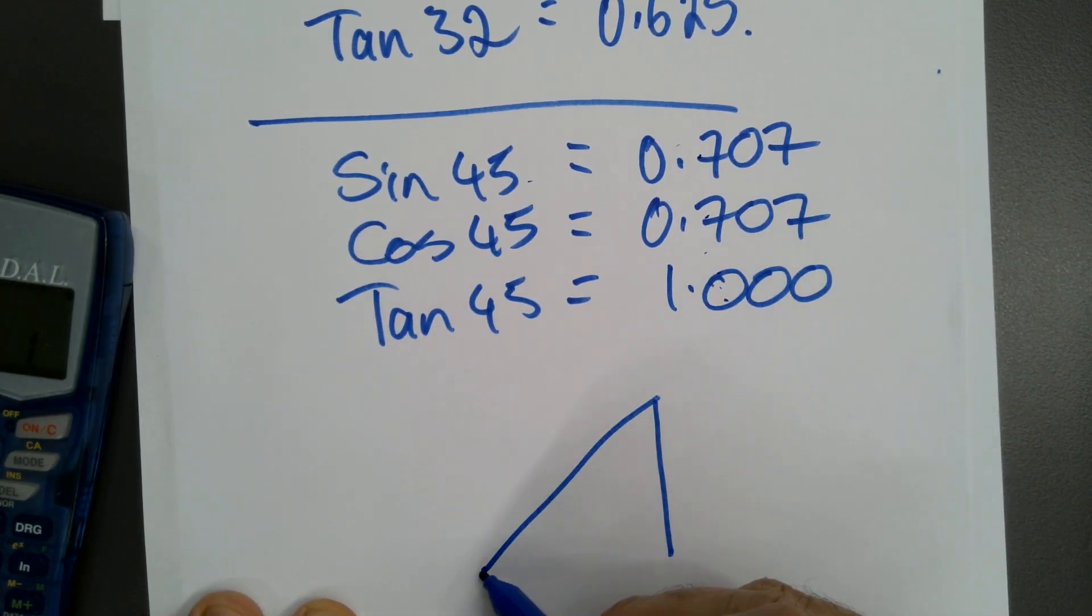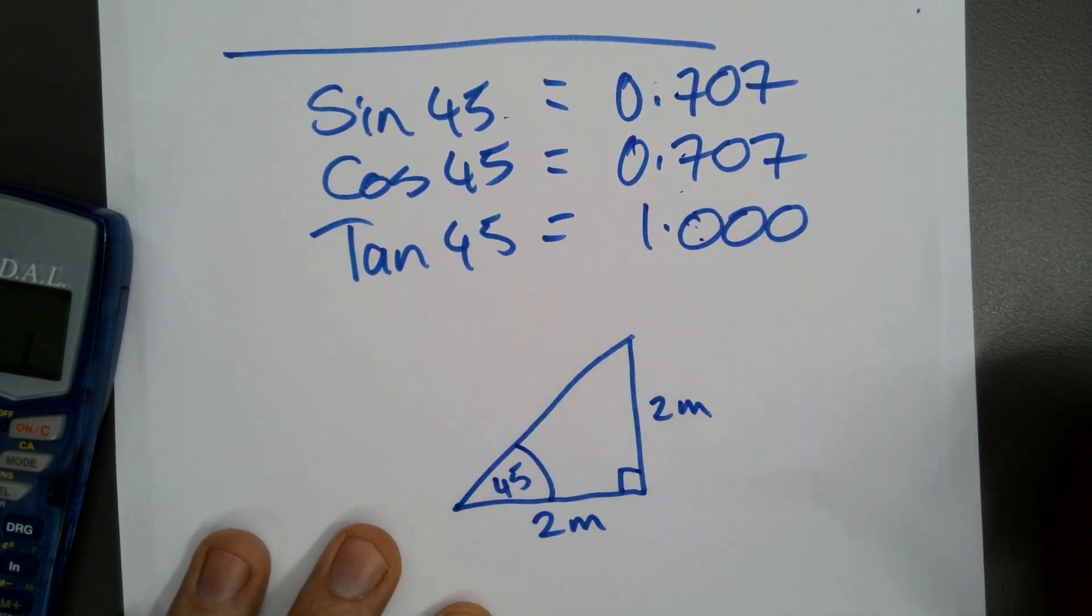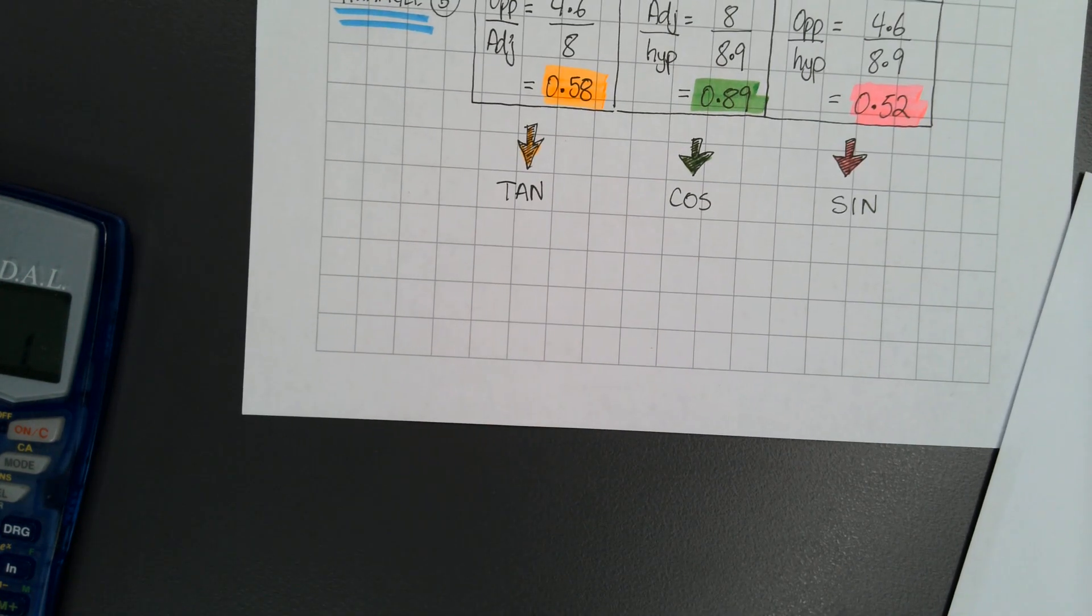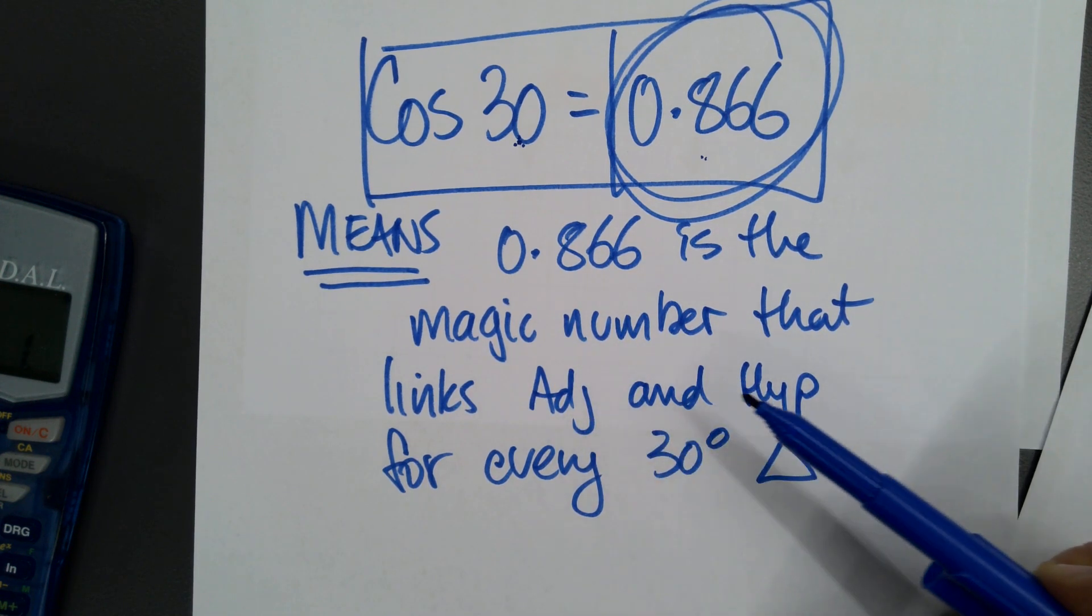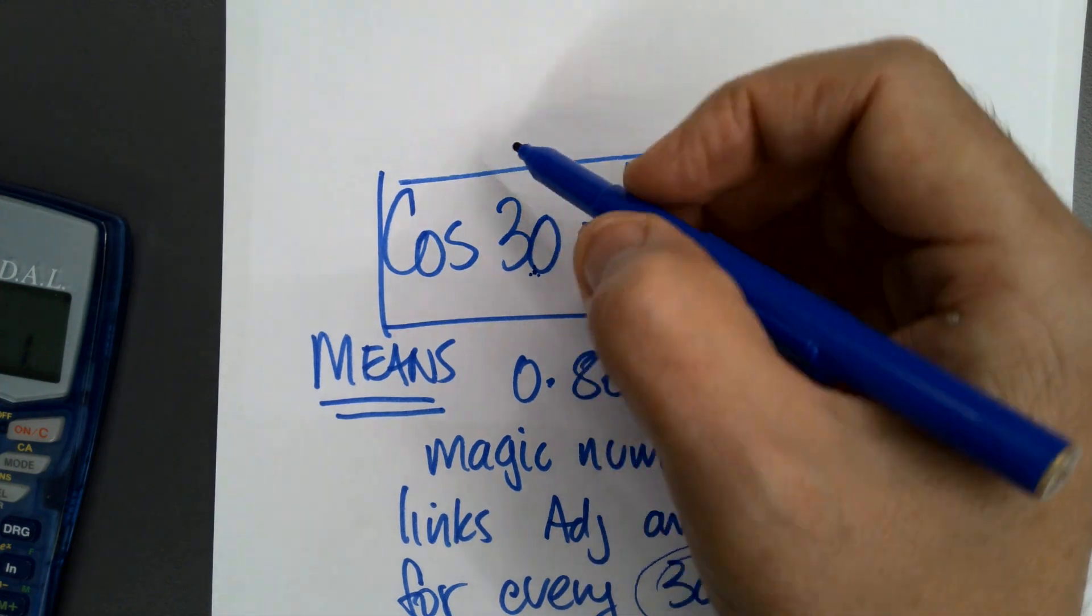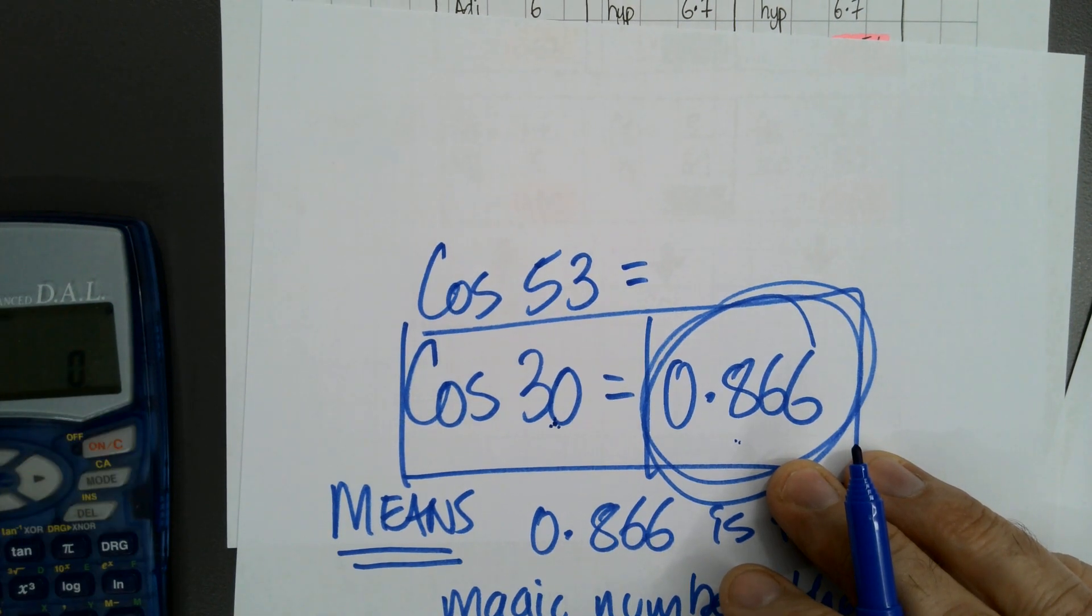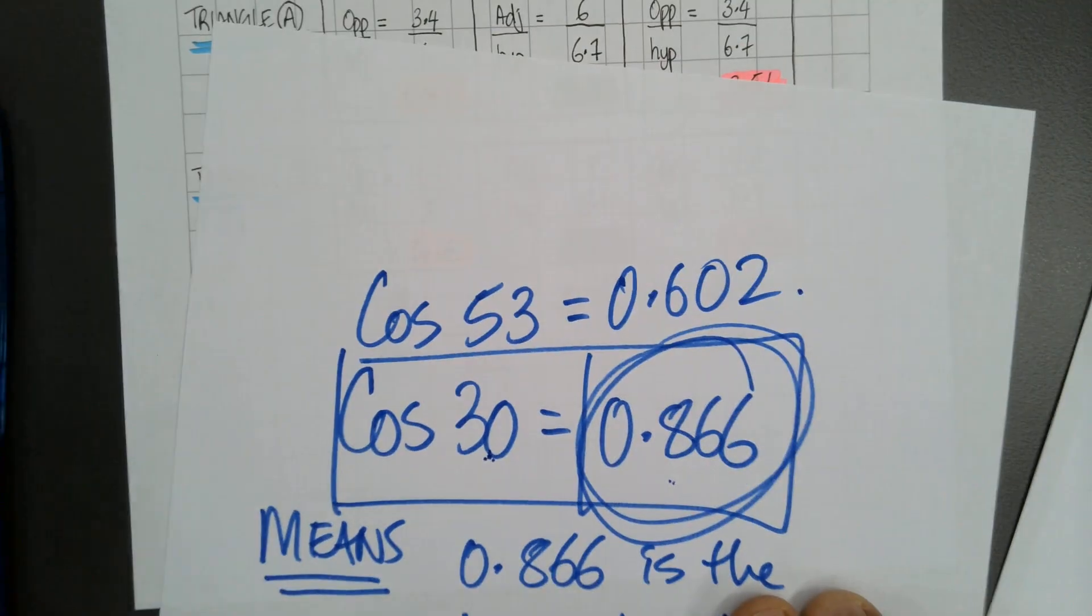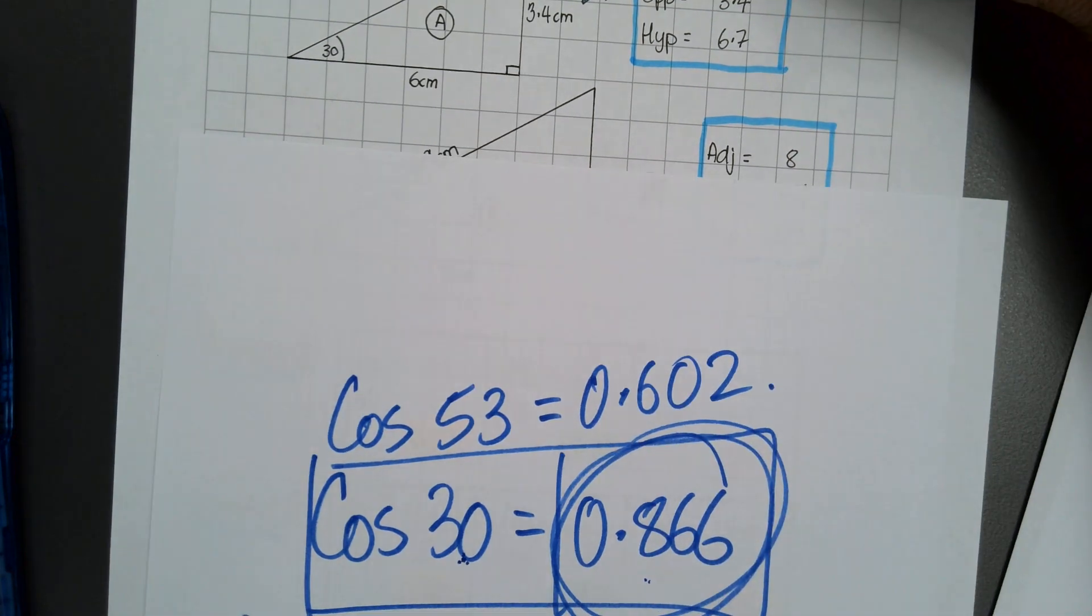So just to go back - what do they mean? Each number is this magic number that links two sides for a triangle when the angle is a particular amount. And as soon as you change this angle, cos 53, yeah let's have a look at that. Cos 53 is 0.602. That's what it means. And then you go and use that to find unknown sides. And we're done now.